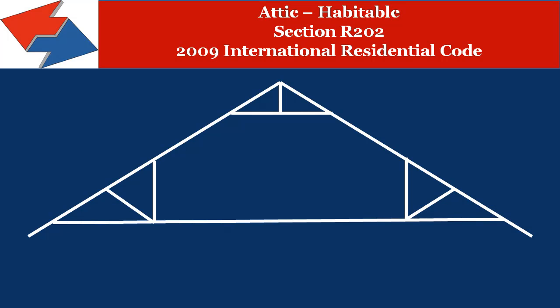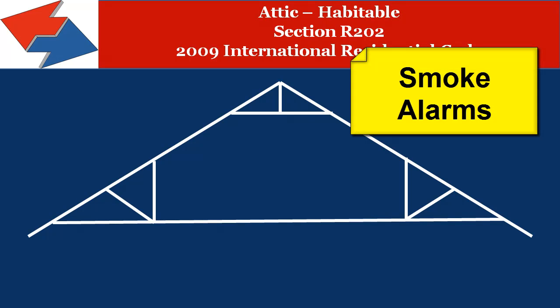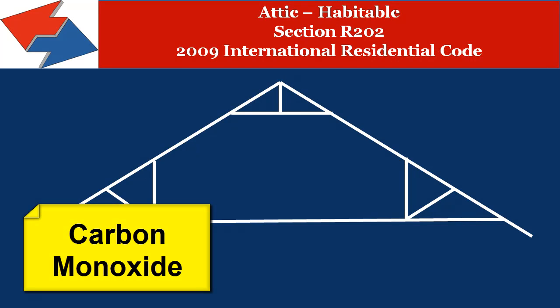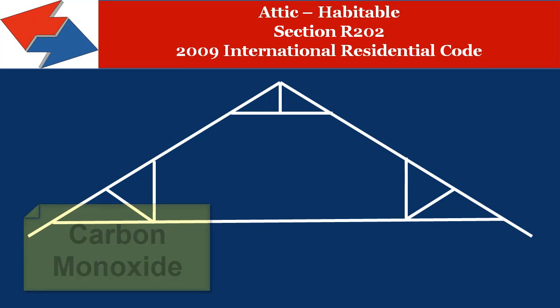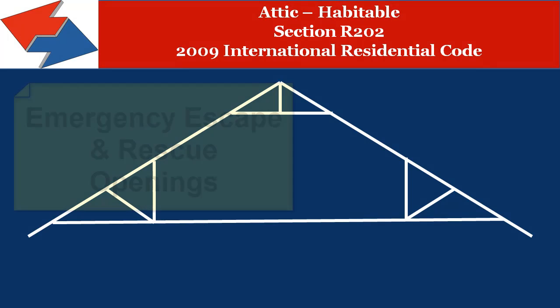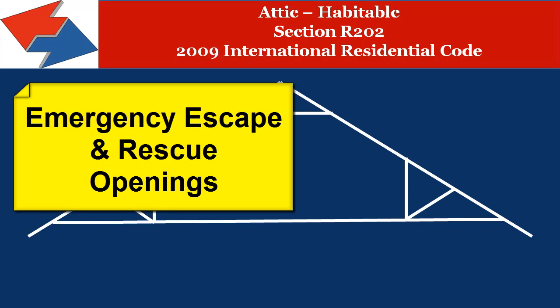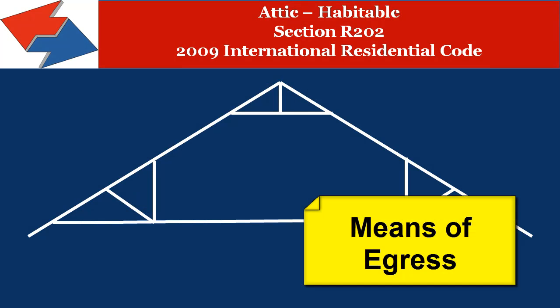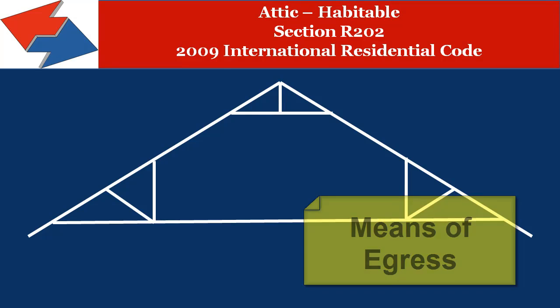Also, since this space is now classified as habitable, it will trigger other code requirements such as smoke alarms as discussed in Section R314, carbon monoxide alarms as discussed in Section R315, emergency escape and rescue openings as discussed in Section R310, and the proper means of egress as discussed in Section R311.